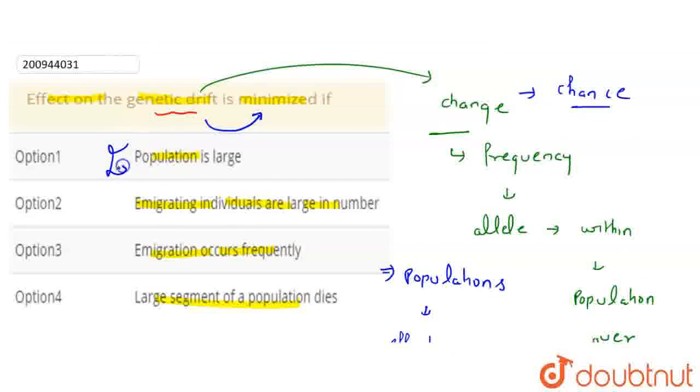The correct option here will be first. Okay, if emigration occurs frequently, so emigration is faster, emigration means the population will lose individuals. If they emigrate faster, then the population will be small, so the effect will not be minimized, it will be more.